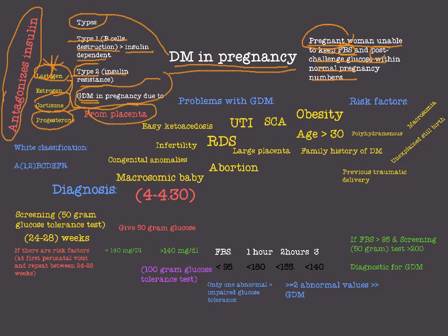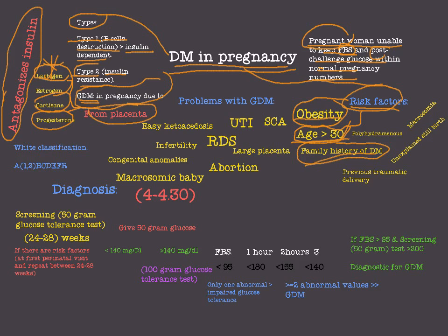Regarding risk factors for gestational DM, the three most important are: obesity, age above 35, and family history of DM. Other risk factors include polyhydramnios, macrosomia, unexplained stillbirths, a history of IUGR, and previous traumatic delivery.